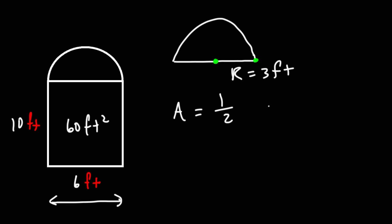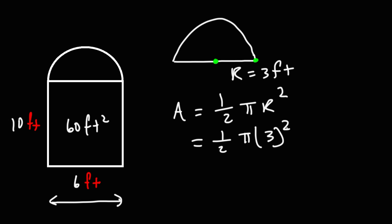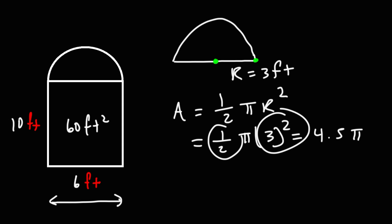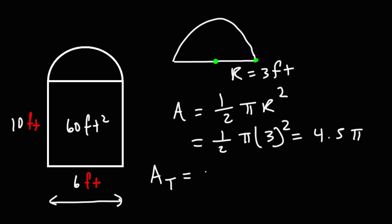The area of the semicircle is going to be one-half pi r squared. So that's half of pi times 3 squared. 3 squared is 9; half of 9 is 4.5 pi. So the total area is going to be the area of the rectangle, which is 60 square feet, plus the area of the semicircle, which is 4.5 pi.